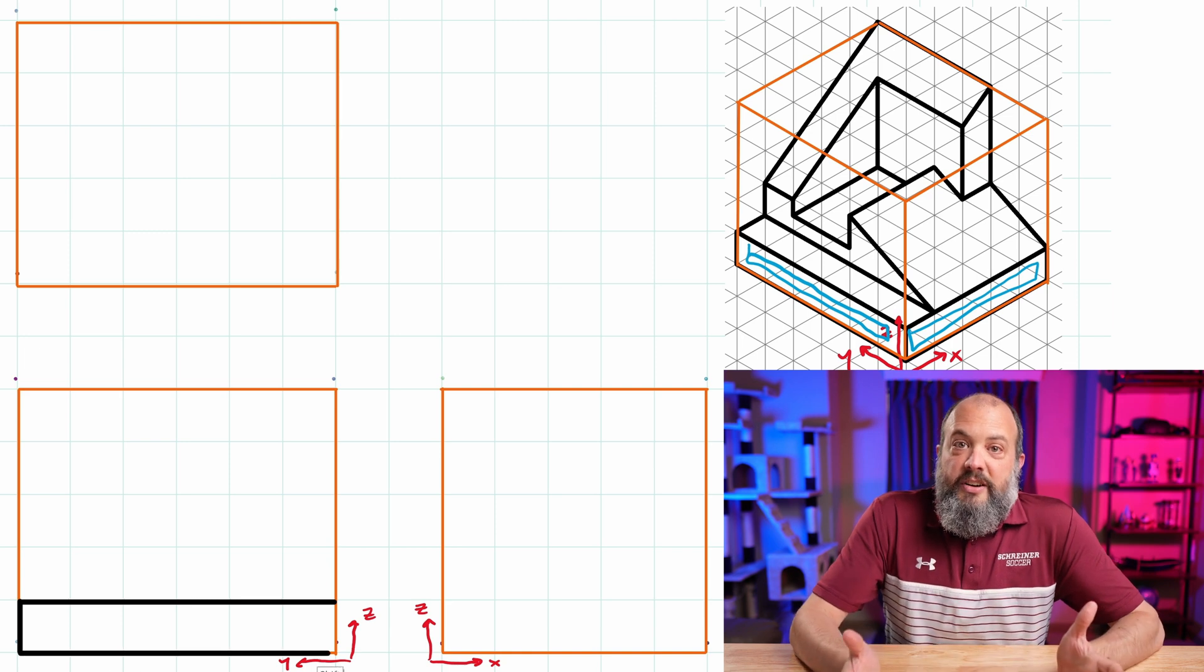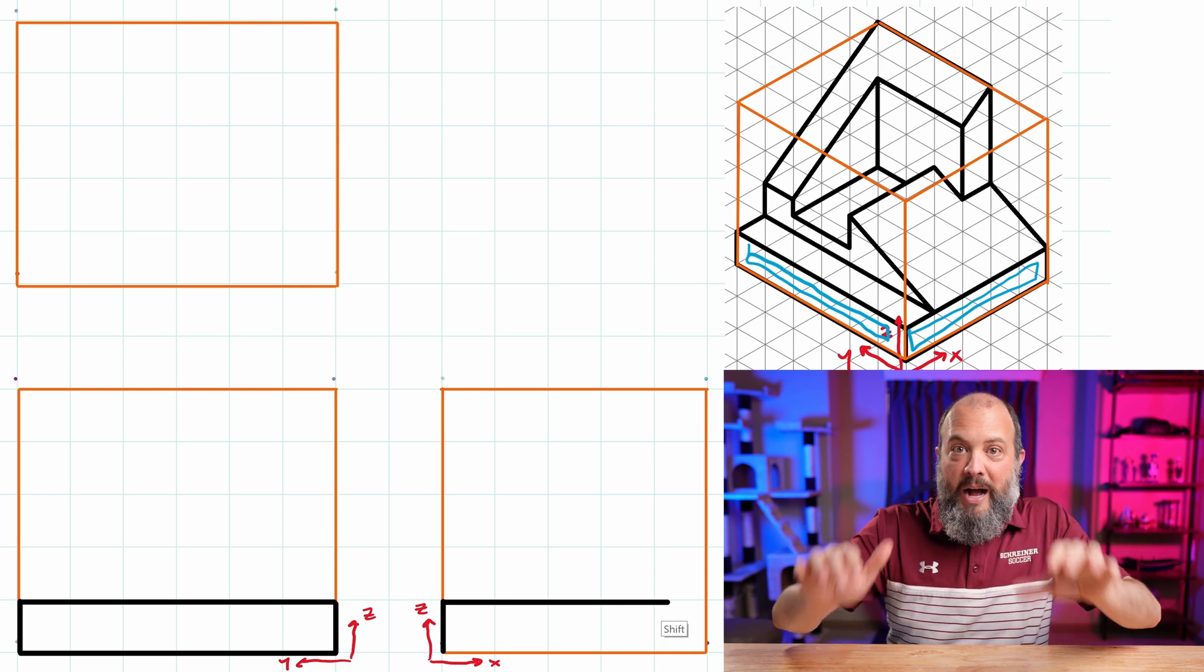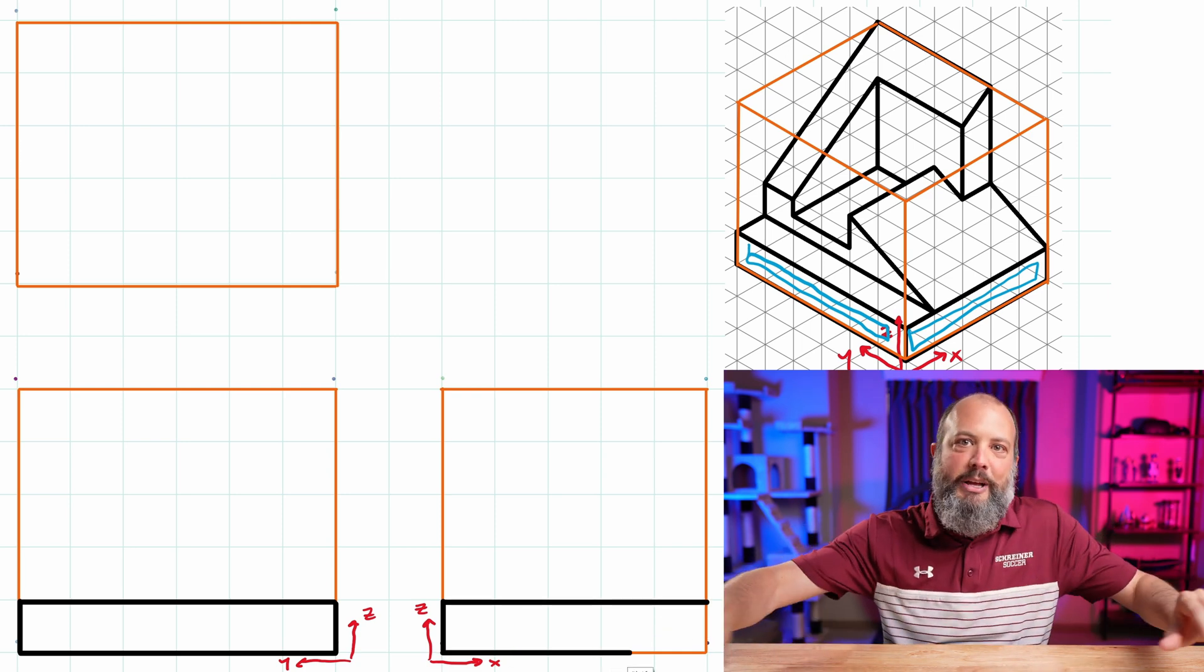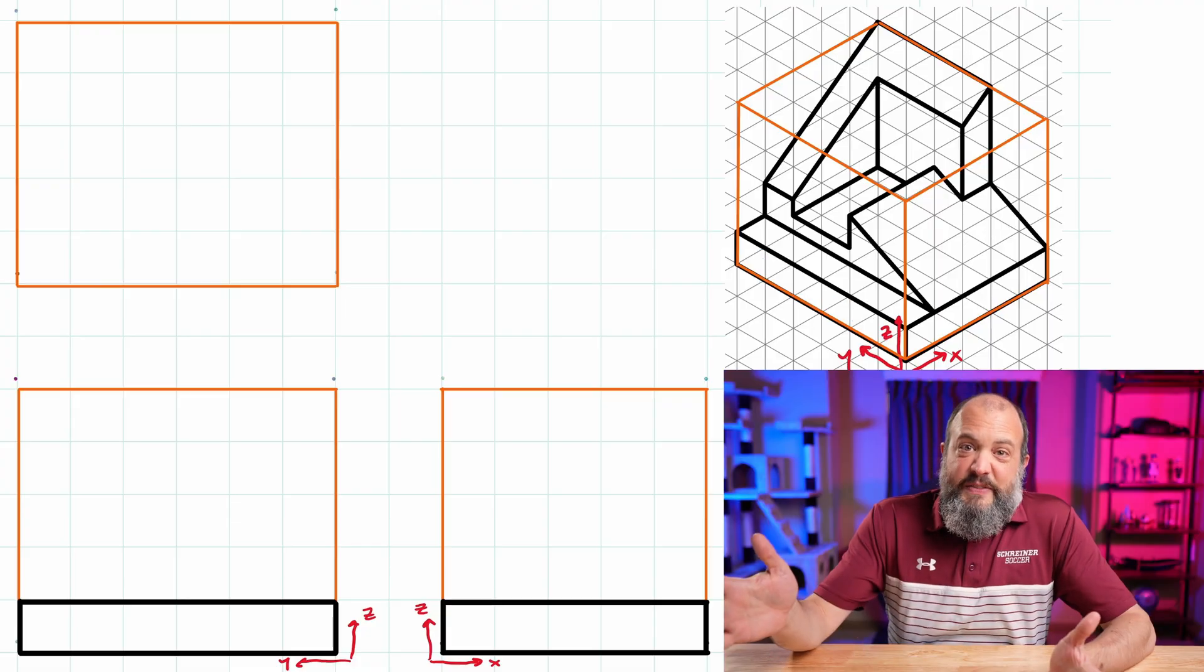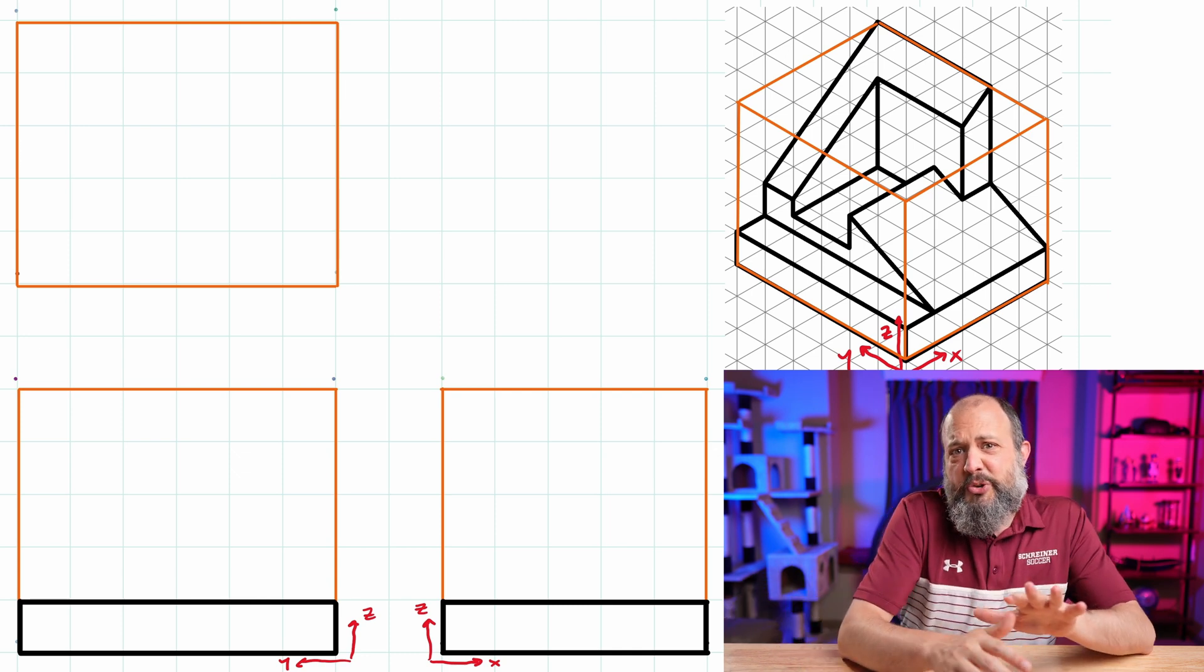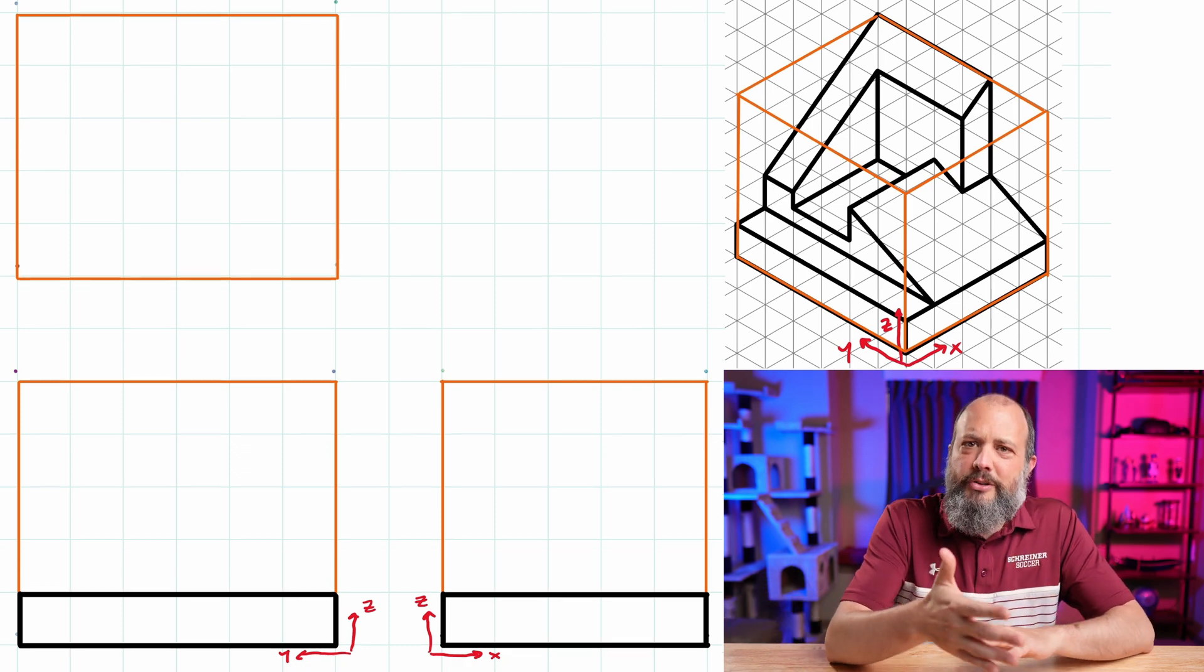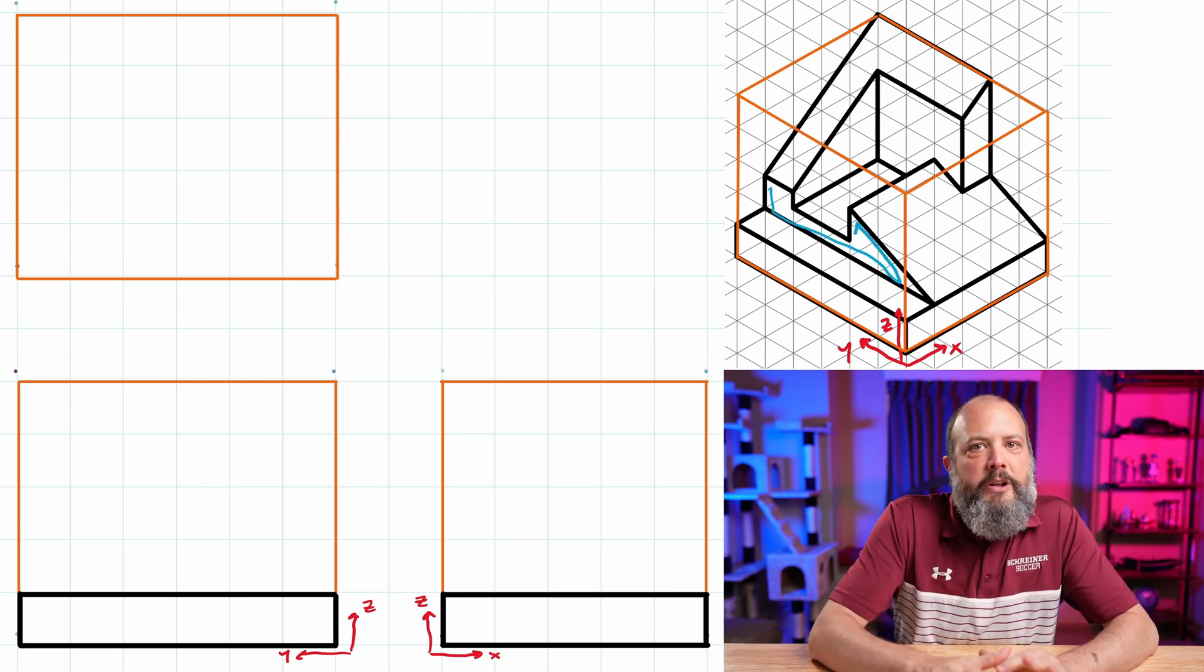So the easiest place to start is going to be the front and right side, because both front and right at the very bottom have this wide, flat, rectangular base that you can just draw in first right away. And you're making progress. The right side view has a big slanted angled surface, but on the front side view, at least there's another couple of vertical surfaces. So I'm going to go to the front side view first and focus on that one.